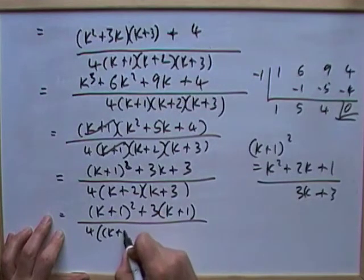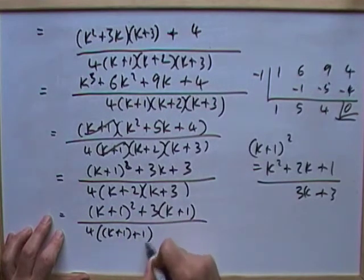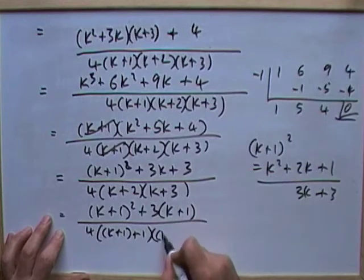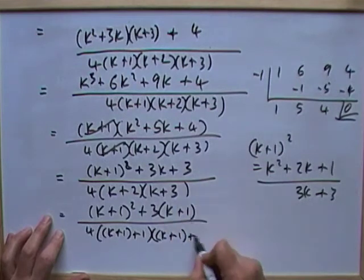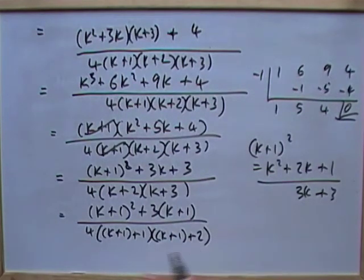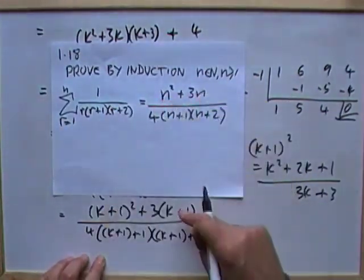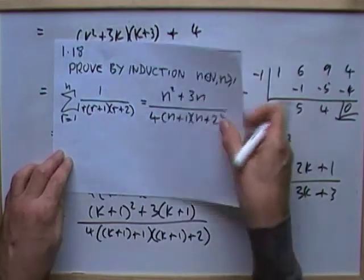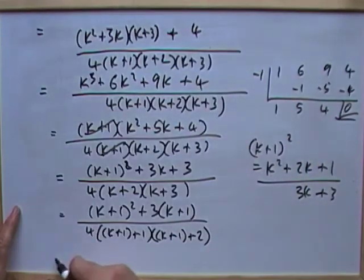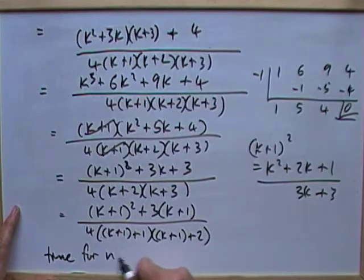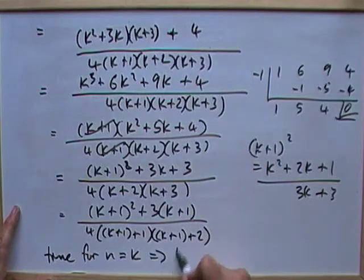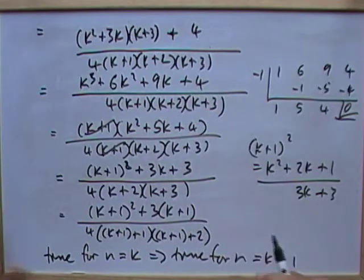Rearrange that to make that a k plus 1, so there's still one more left lying about. Rearrange that to make a k plus 1, so there's still two more left lying about. And then that expression is exactly what I wanted with the n's replaced by k plus 1's, which means I can make the final statement. True for n equals k meant it was true for n equals k plus 1.